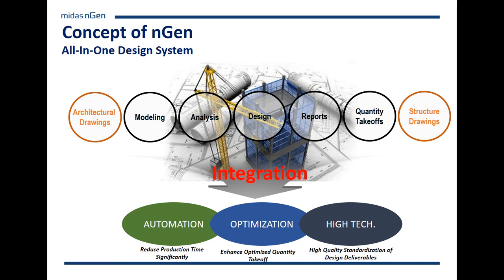What's interesting about this software, being called an all-in-one design system, is that it can go from drawings to drawings. It can take architectural drawings, import them by layers, assign them to different floors, and allow you to directly model in the program — analyze and design different members: beams, steel beams, or RC slabs. It can automatically generate reports that include quantity, and in the end it can produce structural drawings of the whole building or specific sections. This allows for a complete integration of the daily job of a structural engineer.